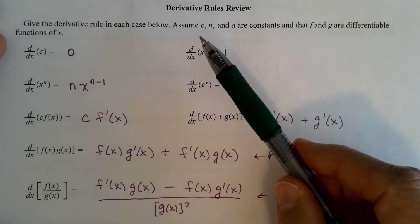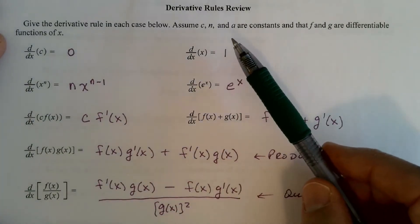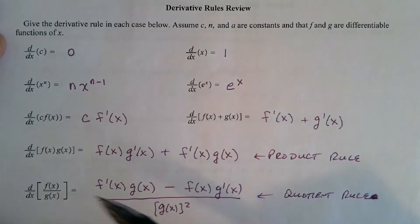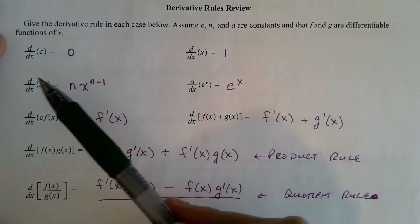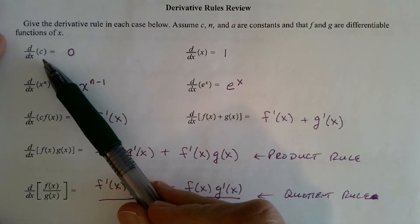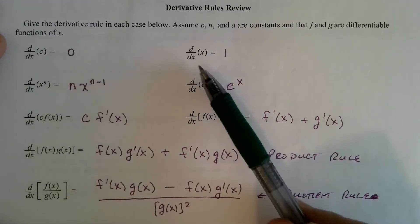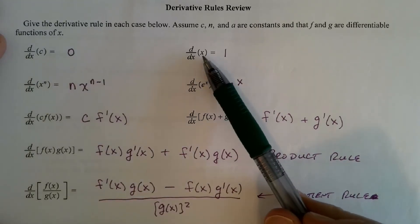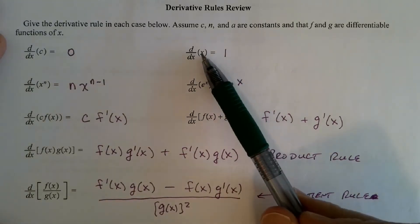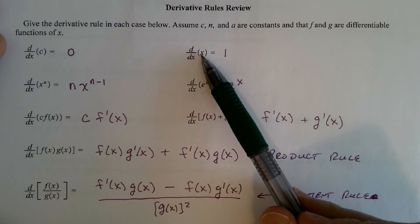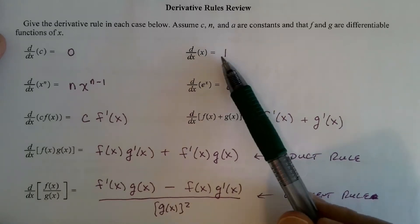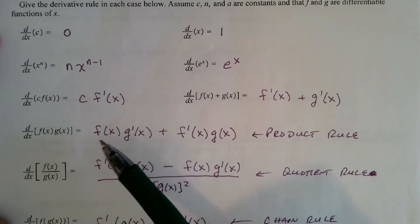Assuming C, N, and A are constants and F and G are differentiable functions: the derivative of any constant is 0. The derivative with respect to x of x is 1. The graph of y equals x is just a line of slope 1, and the derivative is indeed the slope of the function at any point, so the derivative of that function is 1.